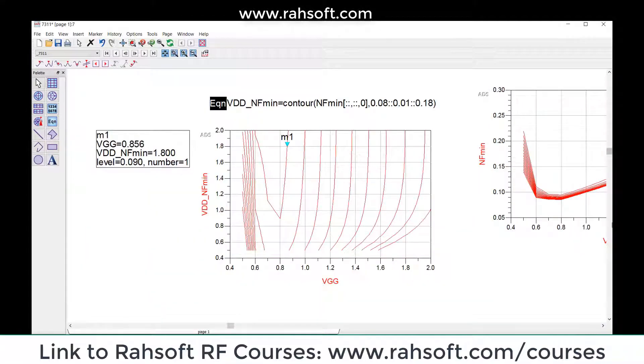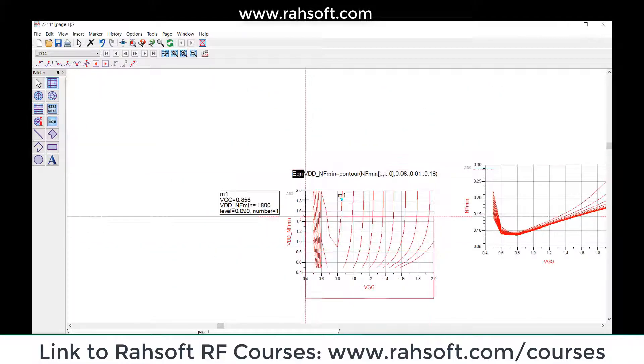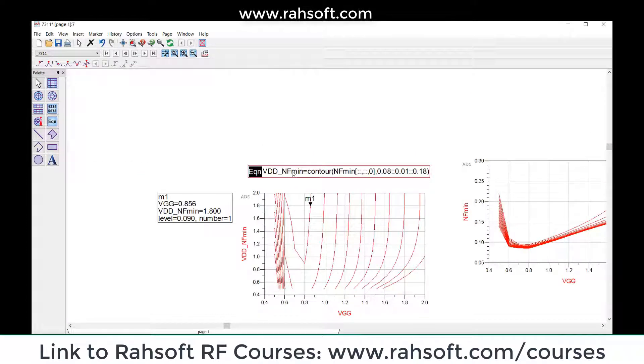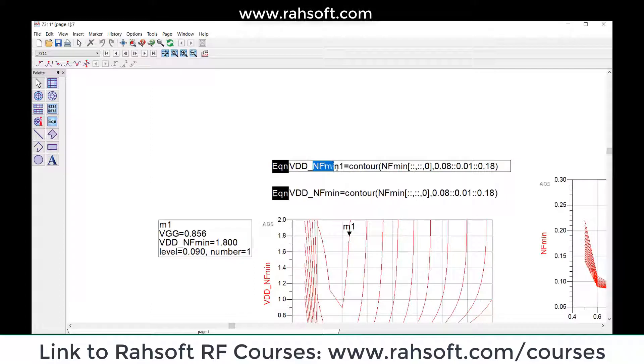This is one of the things you have to be careful about. Now we are going to check our max gain. Same method - I'm going to copy and paste this formula and call this max gain. It means the VDD for max gain. You're just choosing max gain 1.